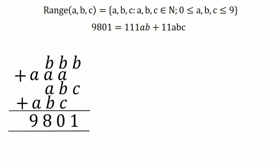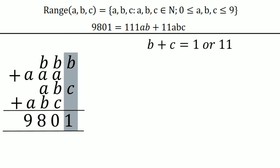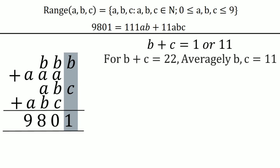Looking at the units column of the addition, we see b + c = 1 or b + c = 11, since a carry could propagate. We cannot have b + c = 22, because that would require b and c to average 11, which exceeds the maximum digit value of 9. So b + c is either 1 or 11.